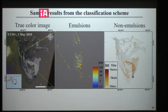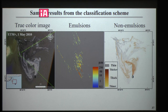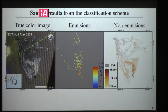Here are the results of the classification scheme. Oil emulsion thickness was estimated. For non-emulsion, it was classified as thin and thick, with the relative thickness of the thick oil class also estimated.